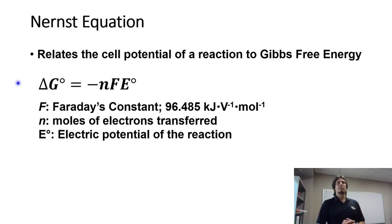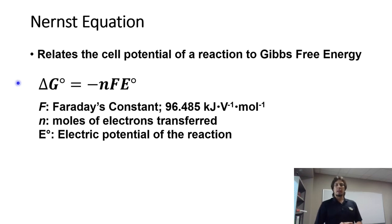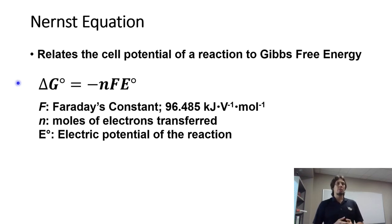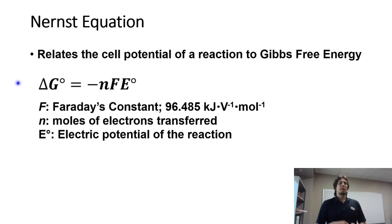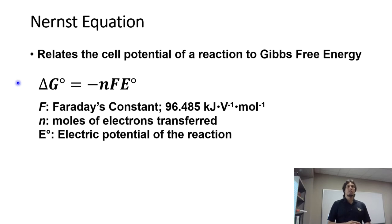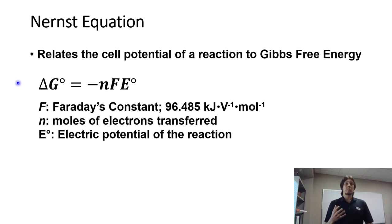F is Faraday's constant, that's 96,485 joules per volt per mole. N is the number of moles of electrons transferred in the redox reaction. E-not is the electric potential of the reaction, and the 'not' symbol again indicates standard conditions.